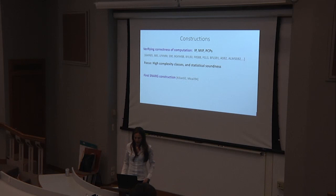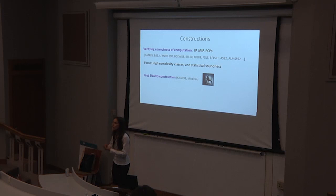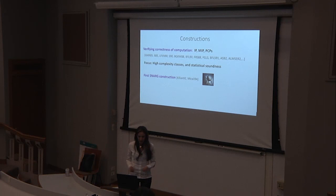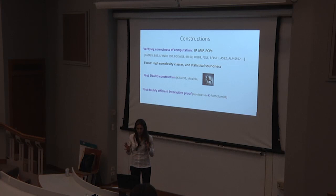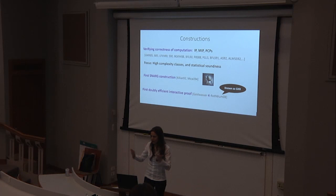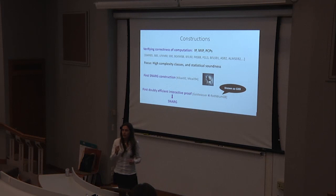The first construction of what we call a SNARG today already existed in the early 90s, with the beautiful work of Kilian and Micali, who used probabilistically checkable proofs. This scheme is not what we use today, mainly because the prover's runtime overhead is too large to implement, and there are security issues. But then, with Shafi Goldwasser and Guy Rothblum, we defined what we called a Doubly Efficient Interactive Proof — known as GKR — which did give rise to a SNARG.